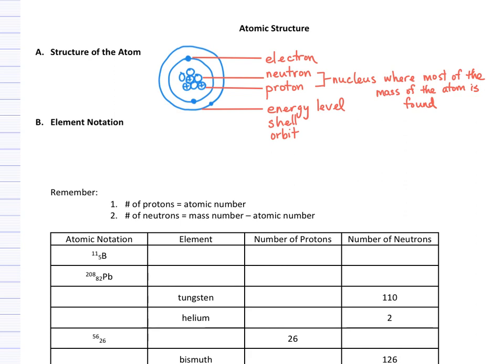And so the nucleus is where we find most of the mass of the atom. Because of that, we will use the sum of the neutrons and protons to tell us the mass of the atom. So we'll add neutrons and protons to get what we call the mass number.